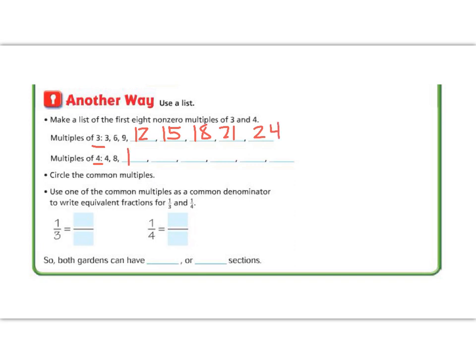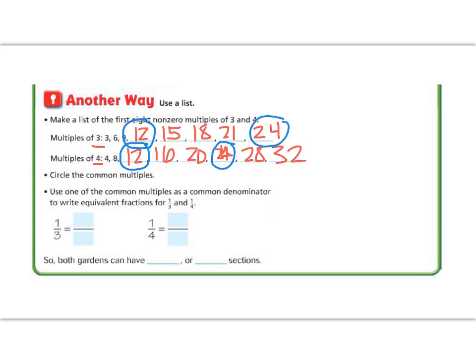Now let's do the same for four: four, eight, twelve, sixteen, twenty, twenty-four, twenty-eight, thirty-two. Now we want to circle the things they have in common. They both have twelve in common and they both have twenty-four in common. We could use either one, but we commonly want to use the smallest one, so we're going to use twelve.